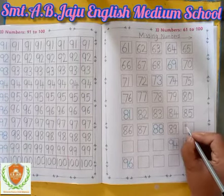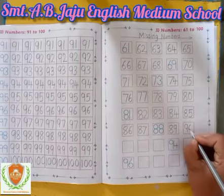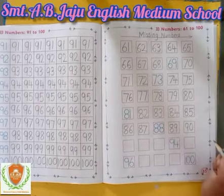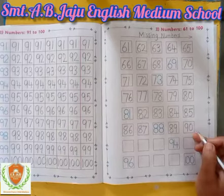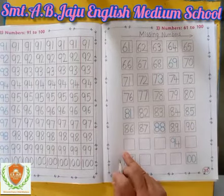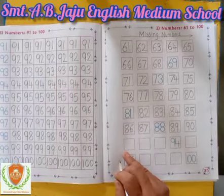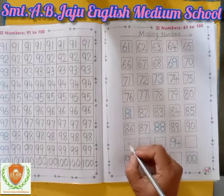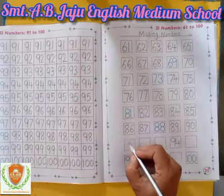First write down 9, then write down 0. 90. Then 91.